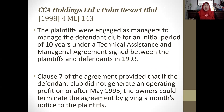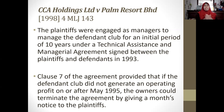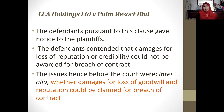The case is CCA Holdings Limited v. Form Result Berhad [1998]. The plaintiffs were engaged as managers to manage the defendant's club for an initial period of 10 years under a Technical Assistance and Managerial Agreement (TAMA) signed in 1993. Clause 7 stated that if the defendant could not generate operating profit after 2 years (after May 1995), the owners could terminate the agreement by giving one month's notice to the appellant. There was no sufficient profit, and the defendant pursuant to clause 7 gave notice to the plaintiff to end the service.